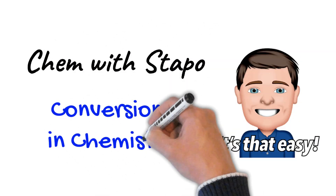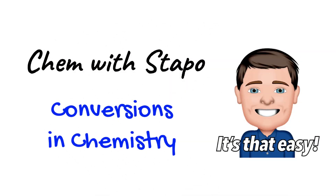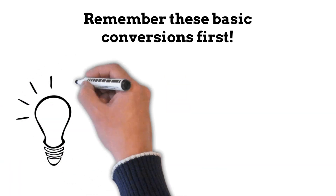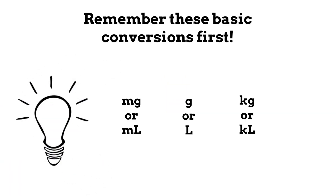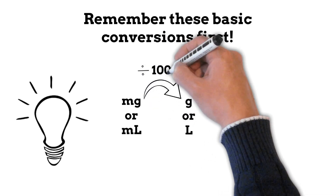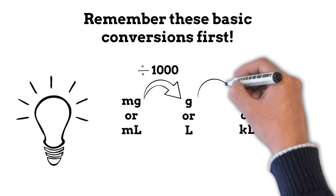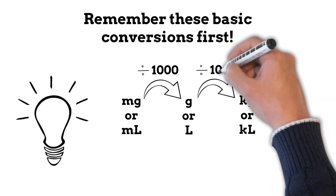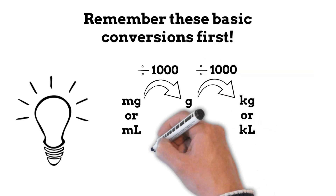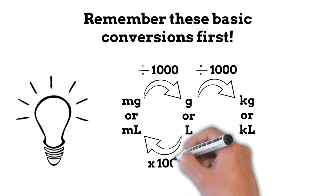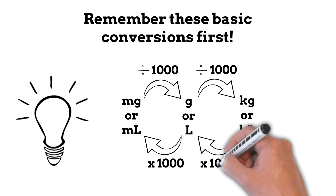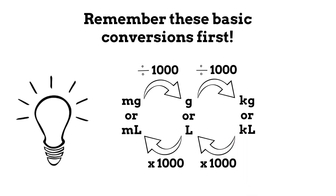Hi, welcome to another chem video with Stapo. If you want to do some conversions in chemistry, remember these basic conversions. First, convert milligrams or milliliters to grams or liters by dividing by a thousand. To go from grams up to kilograms, or liters to kiloliters, also divide by a thousand. If you want to go the other way, times by a thousand — or from kiloliters or kilograms to grams or liters, also times by a thousand.